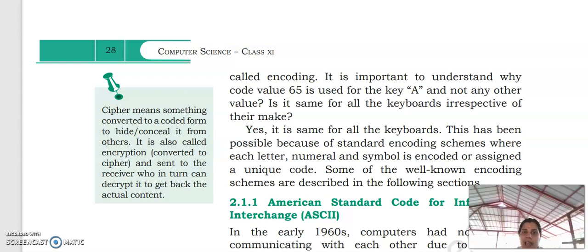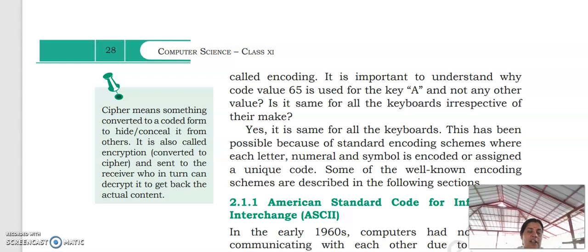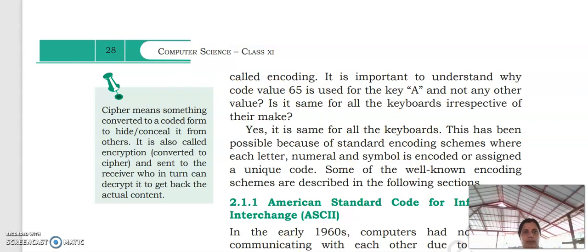In encryption, data is converted to equivalent code, but other users will not identify what the data is, and it is sent to the receiver. When we are sending data, it is converted to its equivalent cipher representation, and this cipher is transferred to the receiver. No one can identify what data we had sent to the receiver. So for security, these encryption mechanisms are provided. Simply, cipher means something converted to a coded form — it is hidden, we cannot know what the hidden data is.